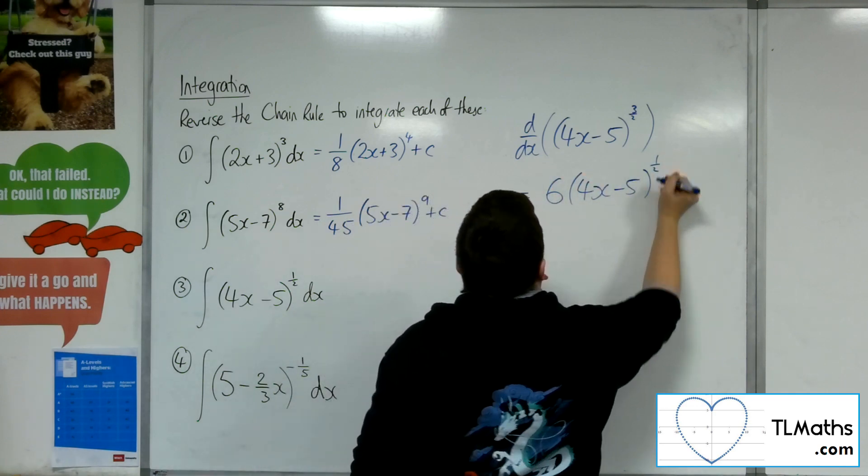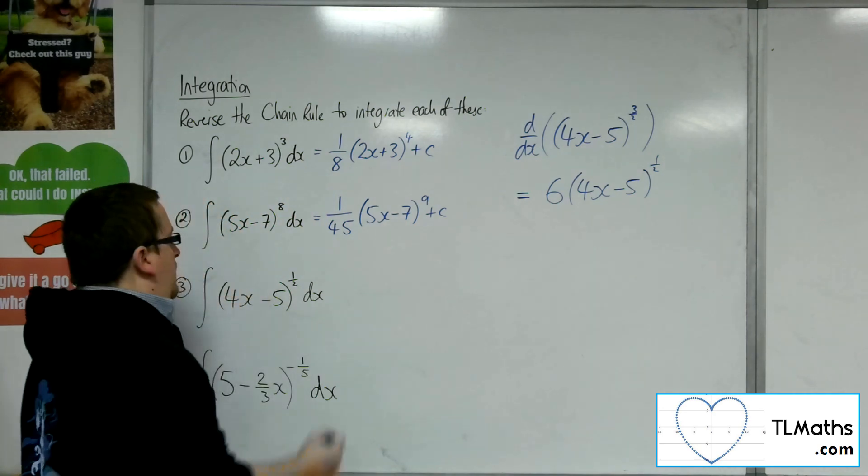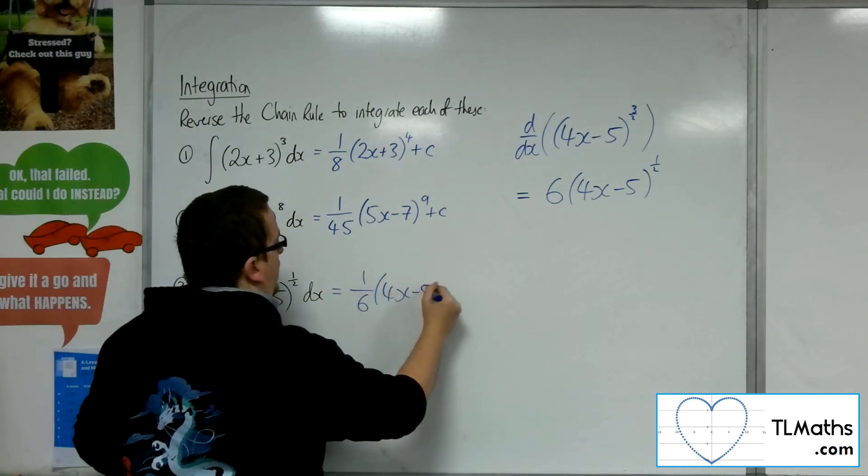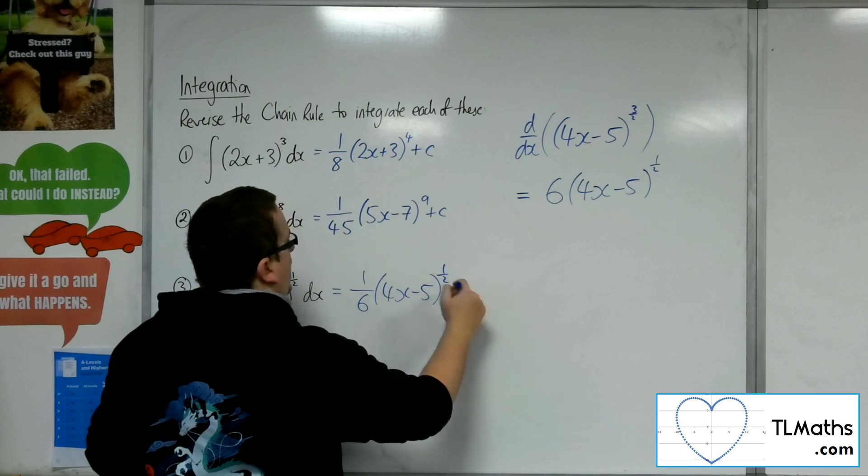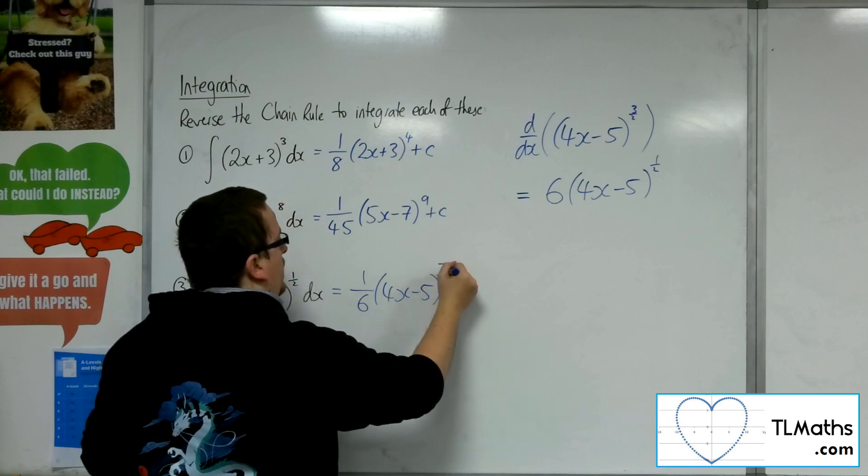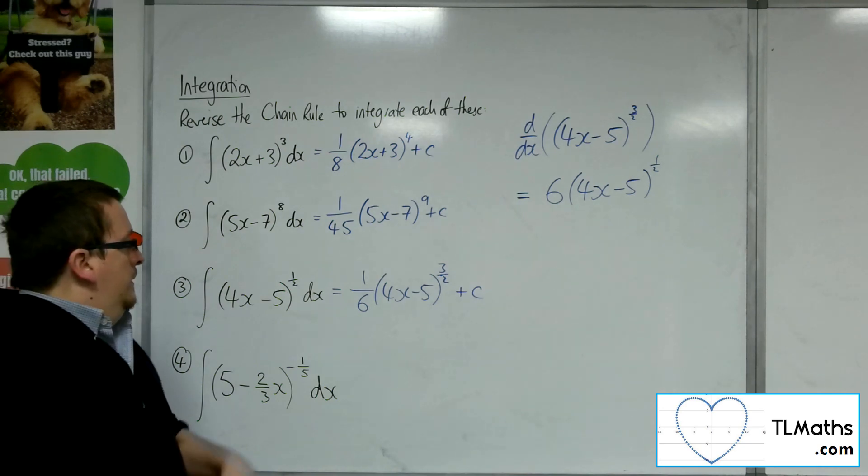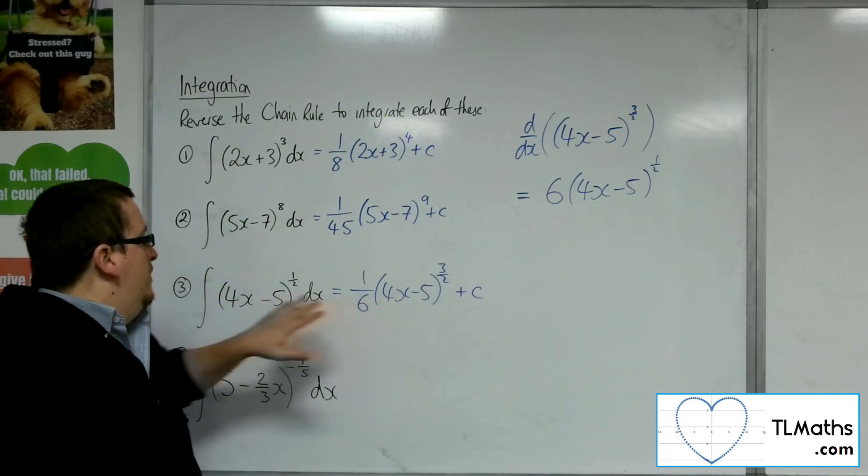Take 1 off the power. So this will be 1 sixth, 4x minus 5 to the 3 halves, plus C. So this will differentiate to that.